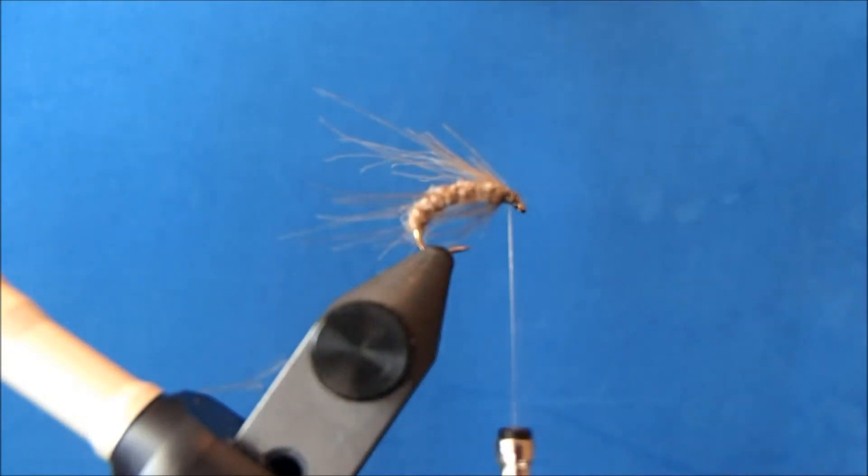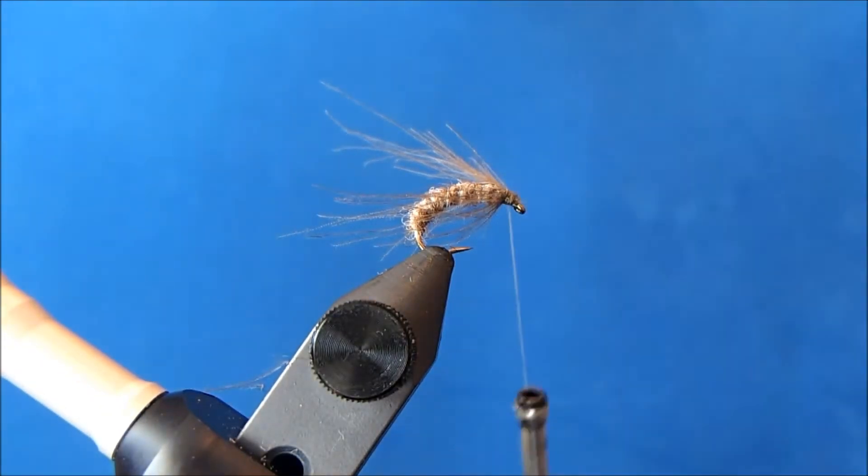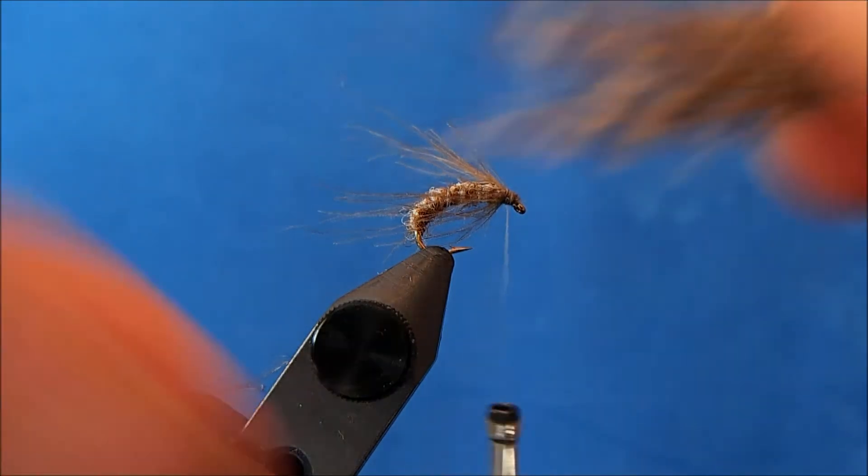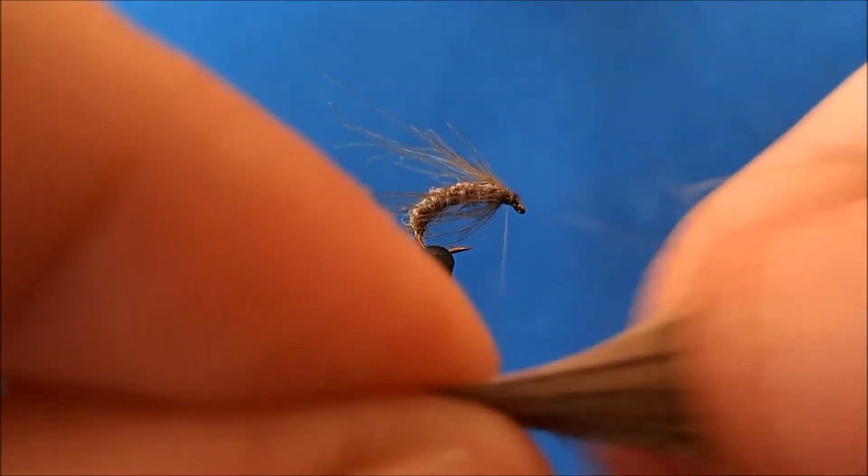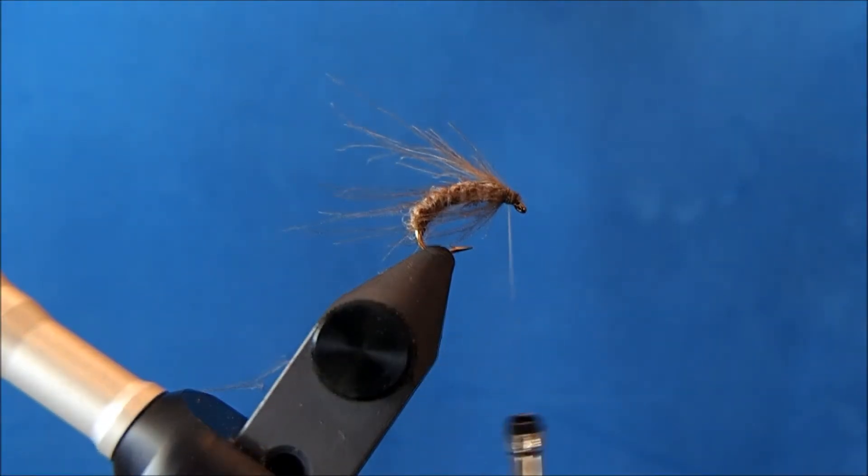So now I can tie in my elk hair. I've got just a natural short fine. I'll take a clump off. Make sure I take out any of the short pieces and all of that under fur.